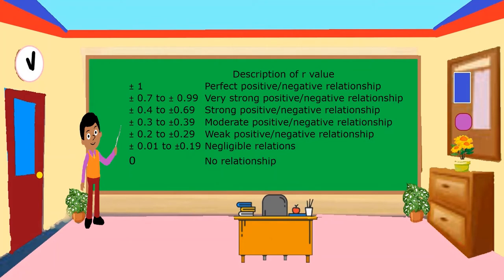This is the description of R value. If R is positive 1, it is a perfect positive relationship; if negative 1, it is a perfect negative relationship. A range of 0.7 to 0.99 means a very strong positive or negative relationship. A range of 0.4 to 0.69 means a strong positive or negative relationship. A range of 0.3 to 0.39 is a moderate positive or negative relationship. From 0.2 to 0.29 is a weak relationship. From 0.1 to 0.19 is negligible, and 0 means no relationship.